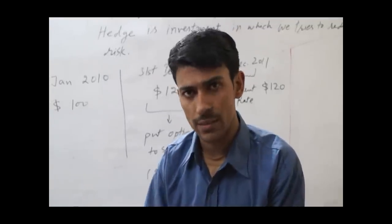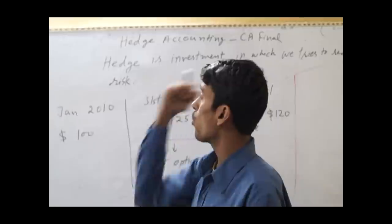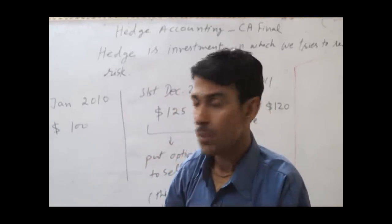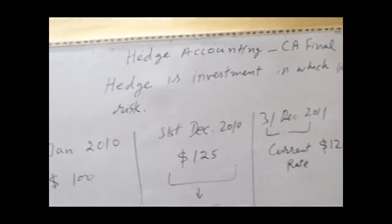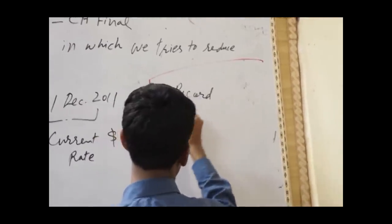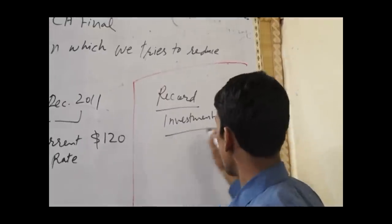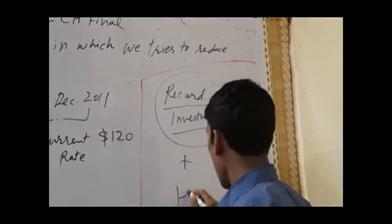aim is to reduce the risk. Hedge accounting is to record the transactions relating to hedge. So in hedge accounting, we will cover two topics: one, record investment; second, record hedge profit or loss.